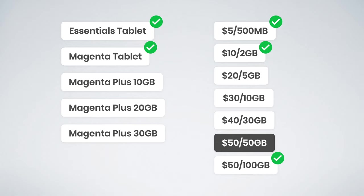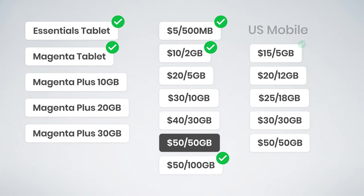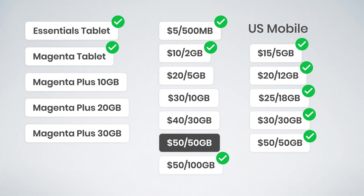But what if you want something even lower cost with more flexibility? You may want to consider plans from U.S. Mobile. They offer $15 for 5 gigs, $20 for 12 gigs, $25 for 18 gigs, $30 for 30 gigs, and a $50 50-gig option. U.S. Mobile is prepaid and offers better value than T-Mobile prepaid in my opinion, and will work in tablet devices. Unfortunately, U.S. Mobile will not work in hotspot devices, but they're a phenomenal option for people looking for prepaid tablet plans.